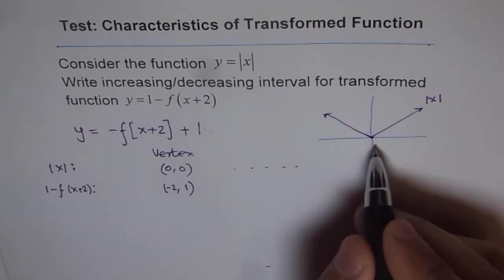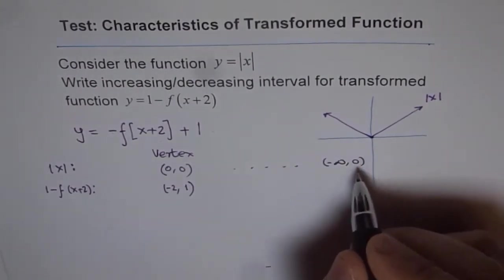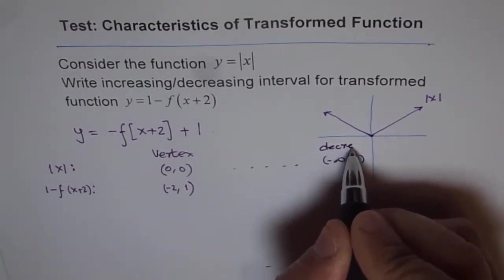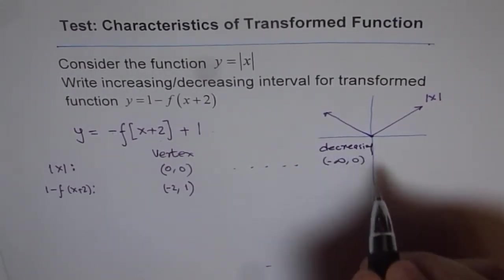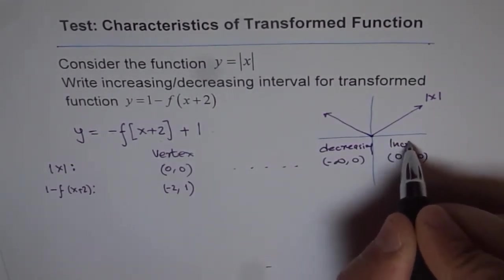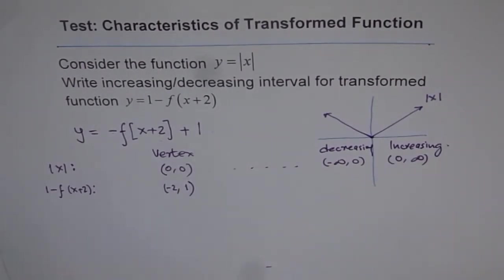So that is absolute x with vertex at origin. Now as you can see, here in this function, absolute x function, what is this interval? Minus infinity to 0, it is decreasing. Do you see that? This is decreasing interval. And then from 0 to infinity, it is increasing.